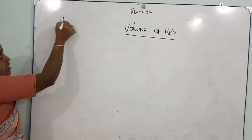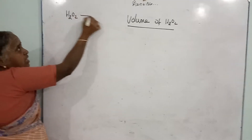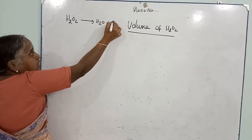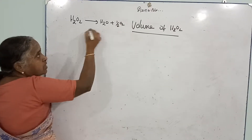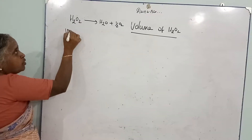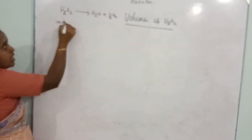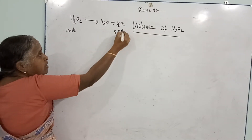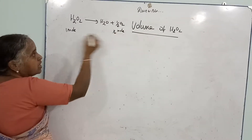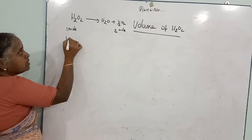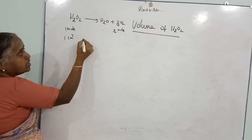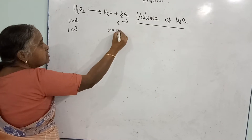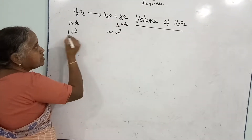Let us see the first equation. Hydrogen peroxide gives water and half oxygen. What is the meaning of it? One mole of hydrogen peroxide liberates half mole of oxygen. Another meaning is: one centimeter cube of hydrogen peroxide liberates one hundred centimeter cube of oxygen.